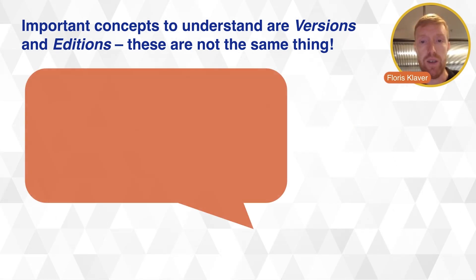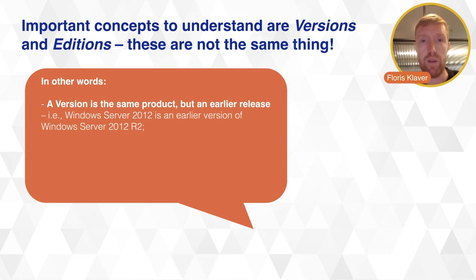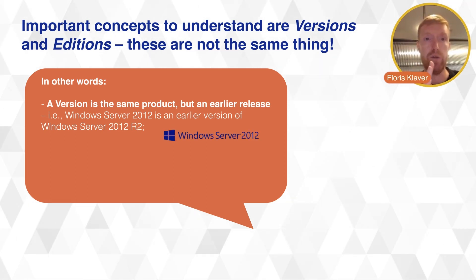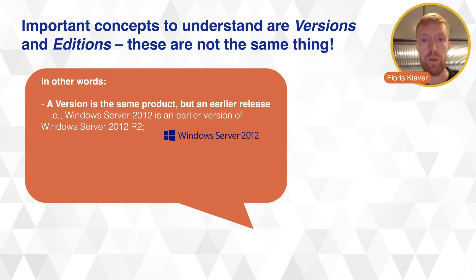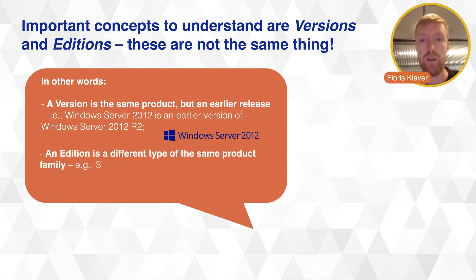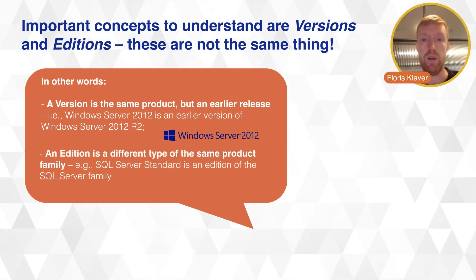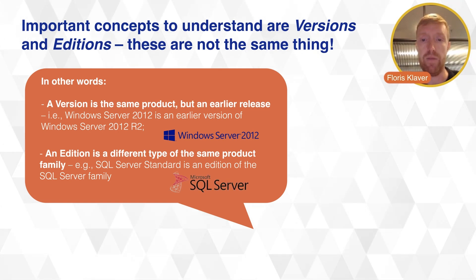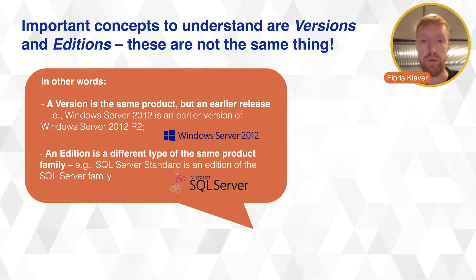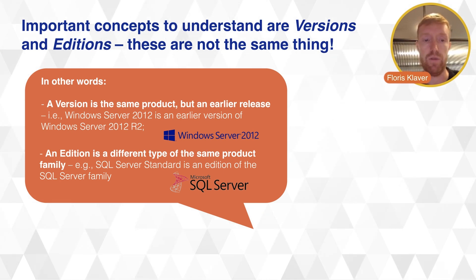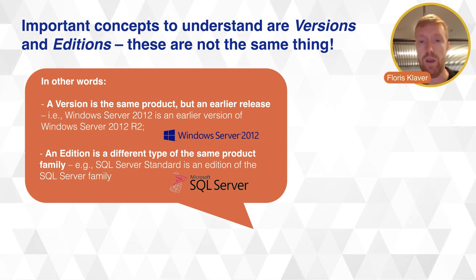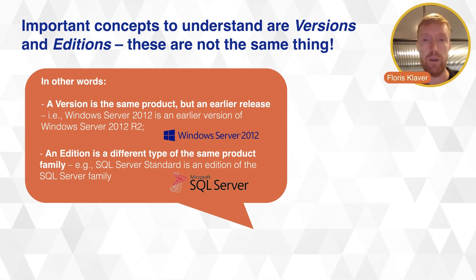You can see it like this: a version is the same product but an earlier release. If you take the latest release and want to use an earlier release, you're talking about using a different version. If you have an edition, you're talking about the product family, but the difference is usually functional — for example, SQL Server Standard opposed to SQL Server Enterprise. Within the SQL Server family, those are the two editions you are able to buy.